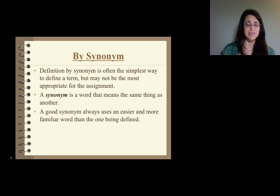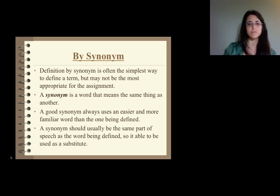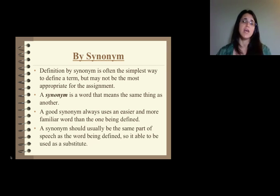Remember that a synonym is a word that means the same thing as another, and that a good synonym always uses an easier and more familiar word than the one being defined. For instance, if we take the word feline, a classic synonym for feline is cat. Because cat is a more common knowledge idea, we can use cat as a synonym to begin to break down what a feline is. But a synonym should usually be the same part of speech as the word being defined. We can't just change and alter what the structure of our idea looks like. As synonyms, the parts of speech must match.